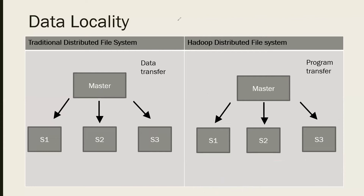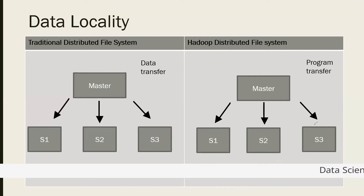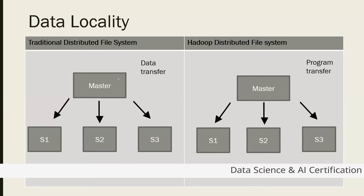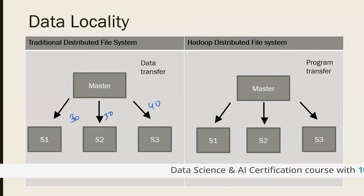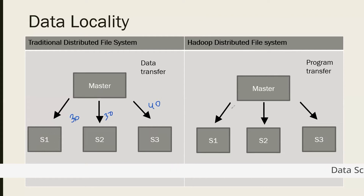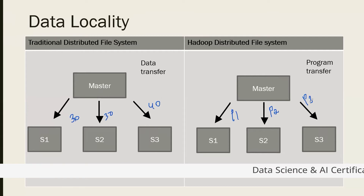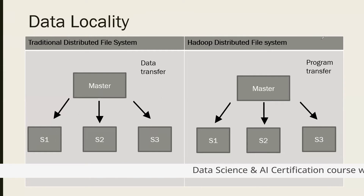In the traditional approach, only the data is transferred to the master — the program is not. The program is applied to the data at the master. But think about the data transfer cost: 30 GB transferred from one slave, 30 GB from another, 40 GB from the third. The transferring time alone is huge, and the cost is high. In Hadoop, only the program is transferred — programs are in KB, so transfer cost is minimal. Only the final consolidated response needs to come back.